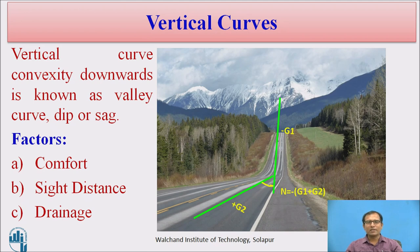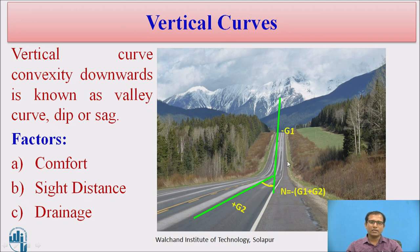Vertical valley curves have a convexity downwards, so that is known as valley curves, or a dip or sag curves. We have two gradients, minus G1 and plus G2, and connecting these two gradients by a smooth valley curve.